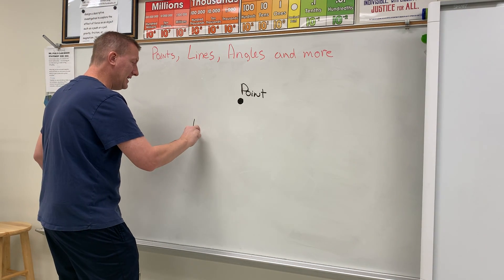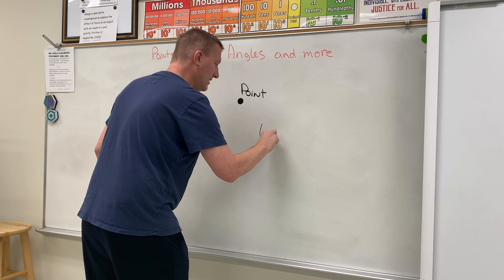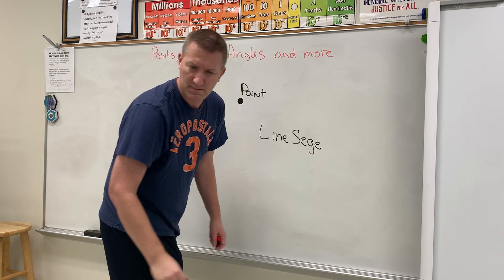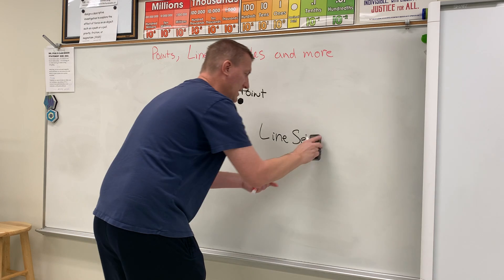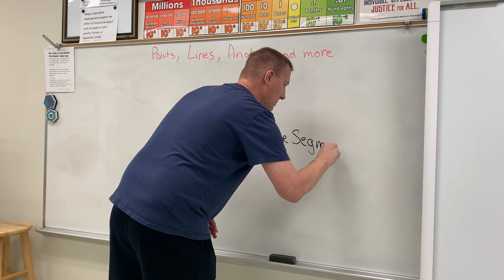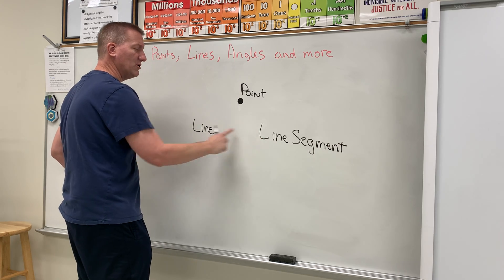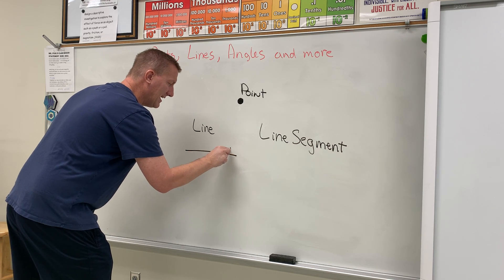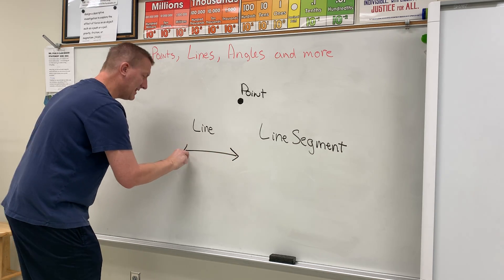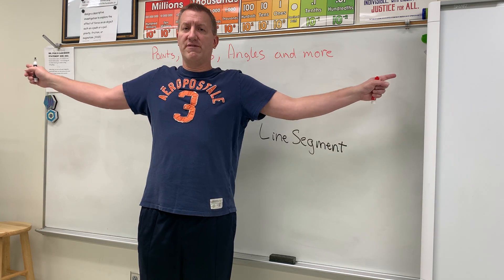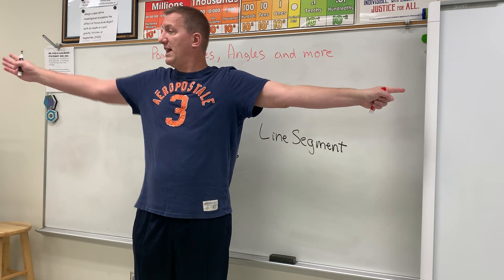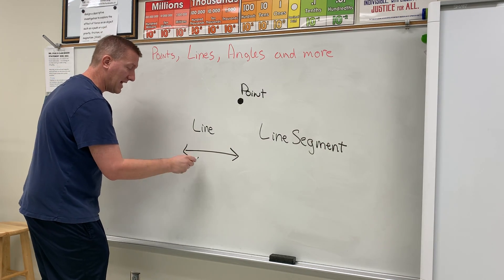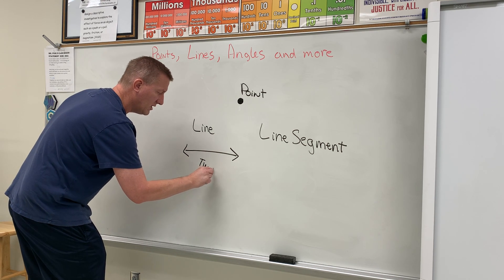Then we have a line, and what it's commonly confused with — a line segment. These two get confused really often. First of all, a line goes in two directions forever — it goes in this direction and it goes in this direction forever. That's a line.